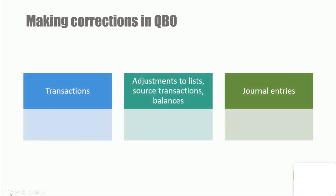When making corrections in QuickBooks Online, you have transactions, adjustments to lists, source transactions and balances, and then you have journal entries. Corrections should be made in that order: first look at whether you need to make adjustments to transactions, whether there should be adjustments to any lists, source transactions or balances, and then see whether you should be adjusting using journal entries.